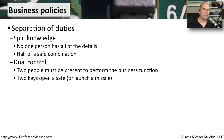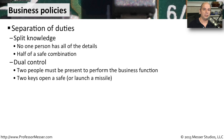Sometimes implementing security isn't something technical — it's more of a business process. We see this often in something called separation of duties. One type is called split knowledge, where you take information and assign it to different people. Everybody gets a little bit of information, but nobody gets all of the information. That way you're protecting anyone from having too much information, because they have a very limited piece of what's available.